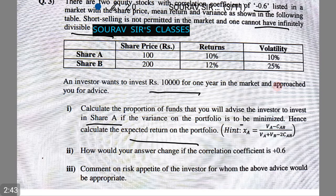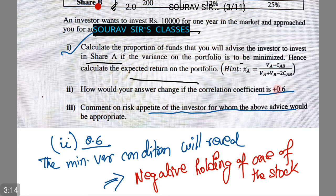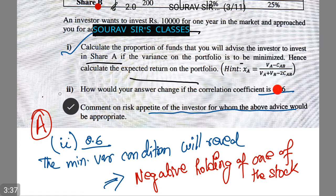Now we have two further questions. How would the answer change if the correlation coefficient is 0.6? When the correlation coefficient is positive 0.6, the minimum variance condition will reveal a negative holding in one of the stocks. Since short selling is not permitted, the market minimum variance will be achieved when the portfolio holds only share A.